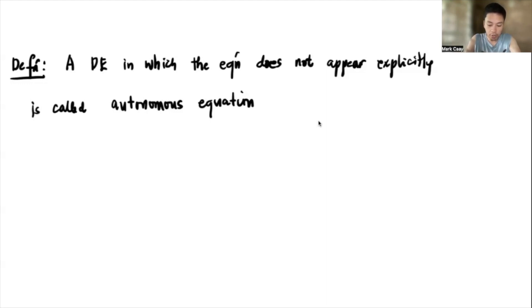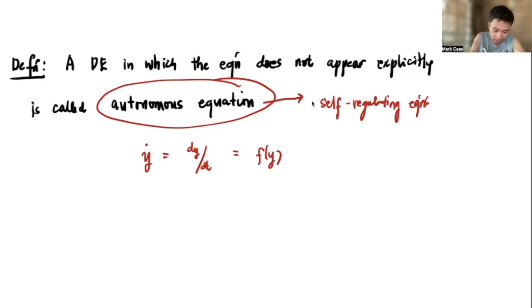A differential equation in which the equation does not appear explicitly is called autonomous equation. And this topic would be actually under the separable equations. This is the reason why I want this to be under with our separable equations, because of the fact that in order for us to solve for the differential equation of this type, we actually use separations of variables. In other words, an equation of this form, dy/dt which is equal to a function of y, is actually autonomous equation. If you may be reading some references, autonomous equation is also referred as self-regulating equations.